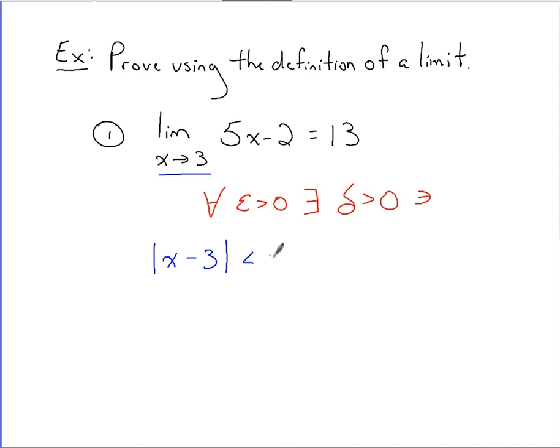We set that less than delta. Then, the rest of this that we're setting up, based off the definition, we start with absolute value.